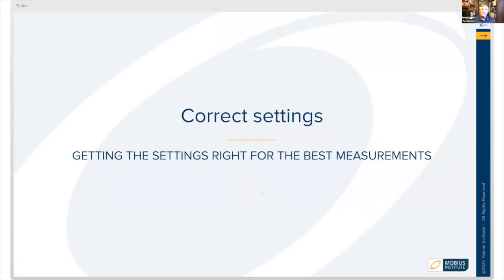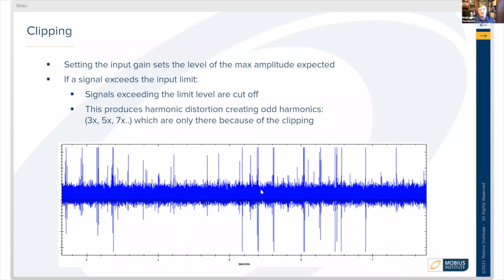Let's talk about correct settings. We want to get the settings right for the best measurements. The first concern is clipping, which occurs when the range of amplitude you're trying to collect data on is less than the amplitude of the sound actually being generated. Setting the input gain sets the level to the maximum amplitude expected. If a signal exceeds that limit, the signals start exceeding the range of your scale.